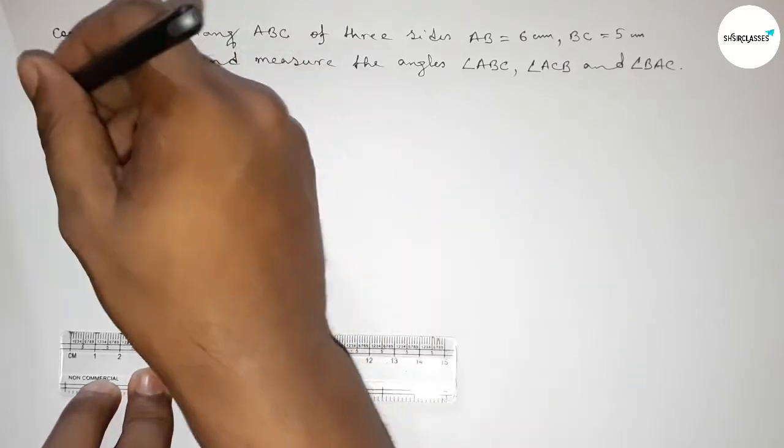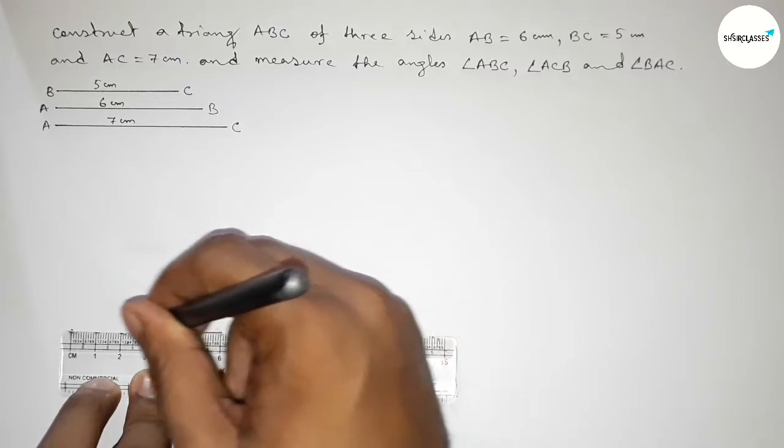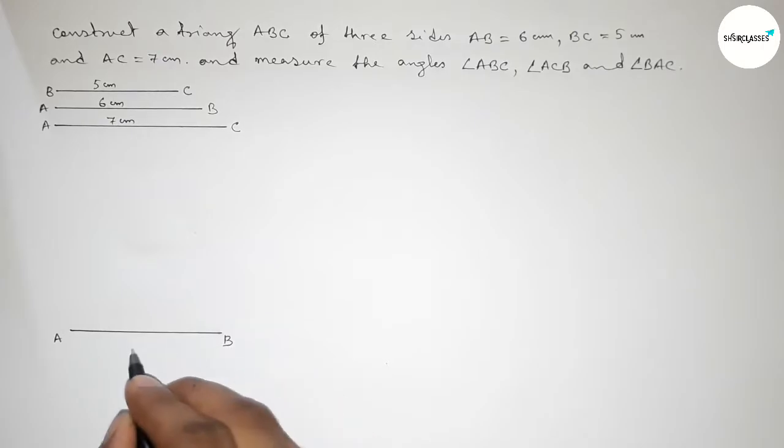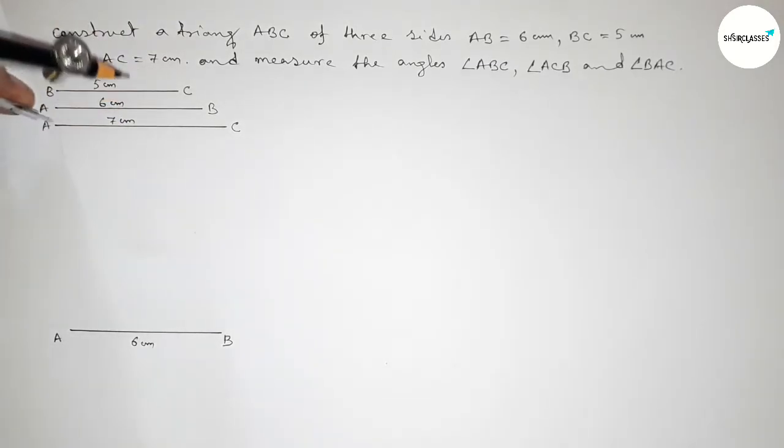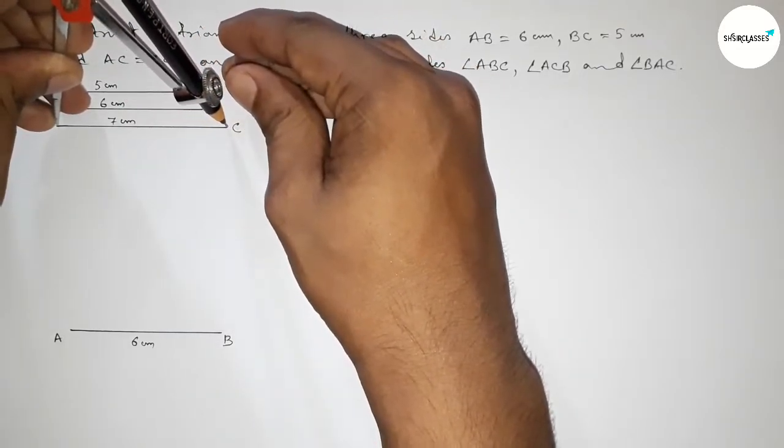First we have to draw a line of length 6 centimeters. Drawing AB line, taking point here A and here B, and this is 6 centimeters. Now taking the length AC equal to 7 centimeters by using compass, putting the compass on point A and drawing an arc.